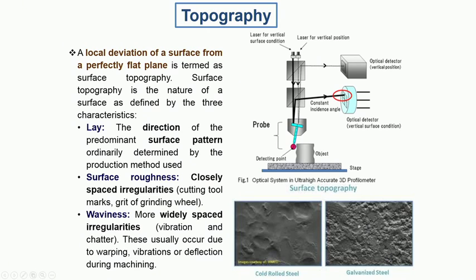On the other hand, the steel sheets which are coated with zinc and applied for car bodies and various other applications, or even painted on top of that, will also have certain roughnesses, and the typical amplitude of these roughnesses could be again a few micrometers if not more.